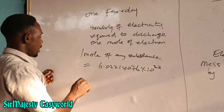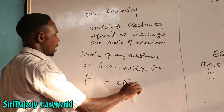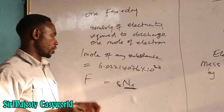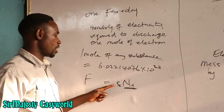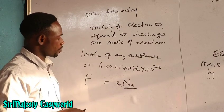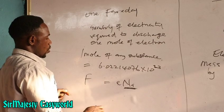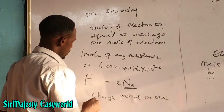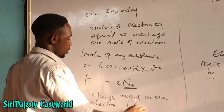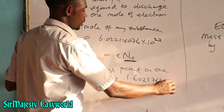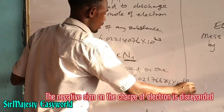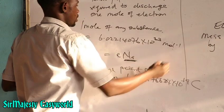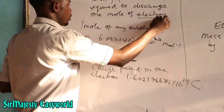To find 1 Faraday, F equals the charge on one electron multiplied by Avogadro's number. The charge present on one electron, as discovered experimentally, is 1.6021766334 × 10⁻¹⁹ coulombs. We multiply this by Avogadro's number, 6.02214076 × 10²³, to get the quantity of electricity required to discharge that number of electrons.